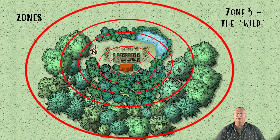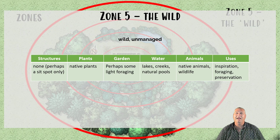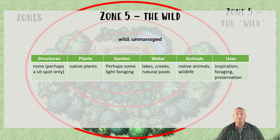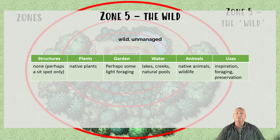Last but definitely not least is zone 5, the wild. While it's not a space we go to very often, when we do go, we're looking to learn — it's not something we manage, but something we go to learn from. It's a teaching space. Structures could be none, or potentially just a sit spot where you can go to sit, watch, and learn from the interactions happening within that landscape. Plants are native species and other habitat species that are self-replicating. Some light foraging may happen there. Water includes creeks, lakes, and natural pools already present. Animals are native wildlife. We go there for inspiration, foraging, and preservation.